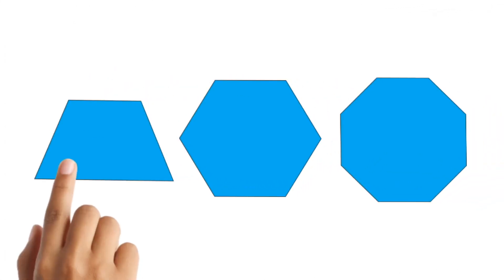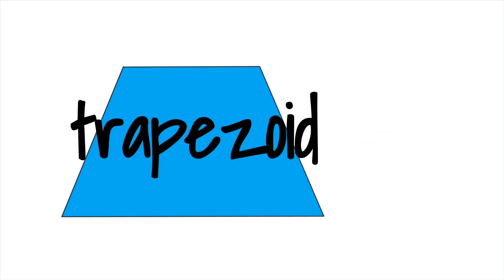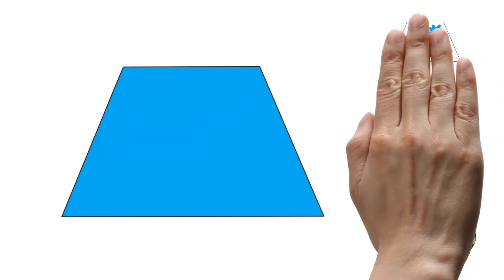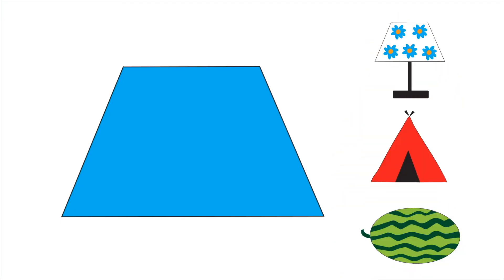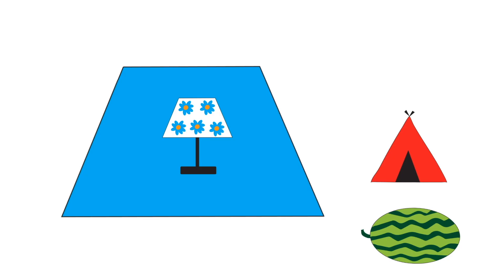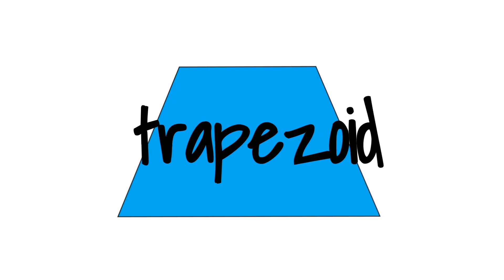Let's learn the shapes trapezoid also known as trapezium, hexagon and octagon. This is a trapezoid, also named trapezium. Can you see the object shaped like a trapezoid or a trapezium? The lampshade is shaped like a trapezoid or a trapezium. Trapezoid or trapezium.